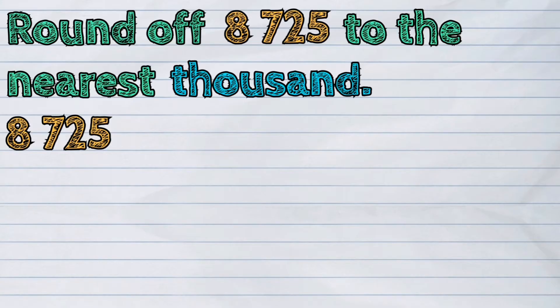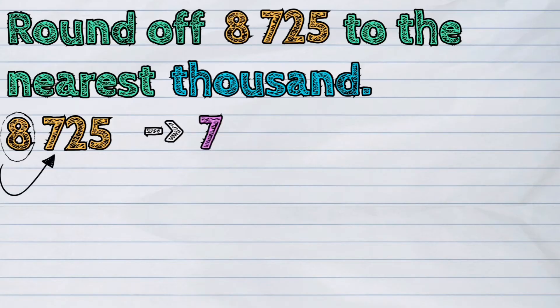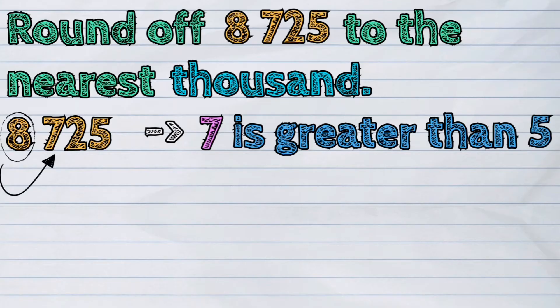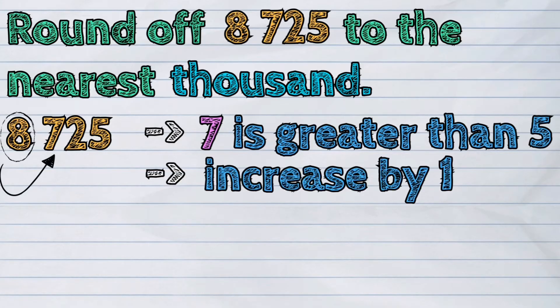We will now encircle the digit in the thousands place. Next, we will check if the digit to its right is greater than 5. It's 7. Because it's greater than 5, we will increase the encircled digit by 1.